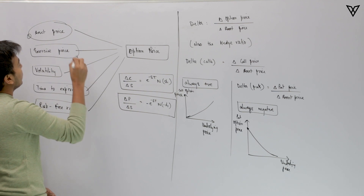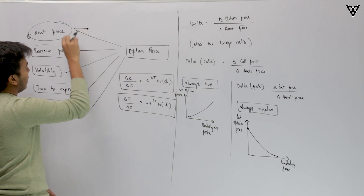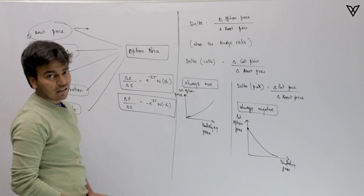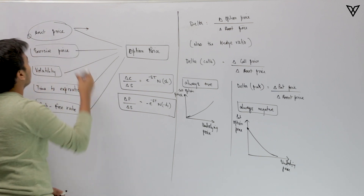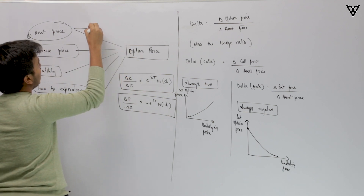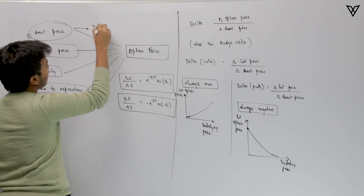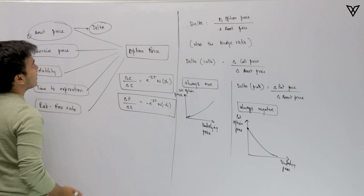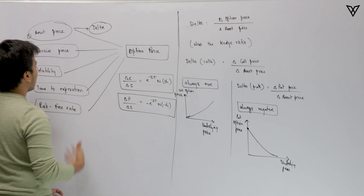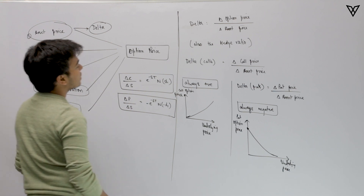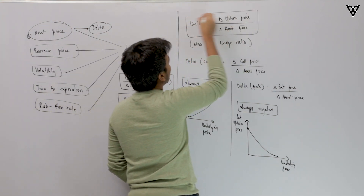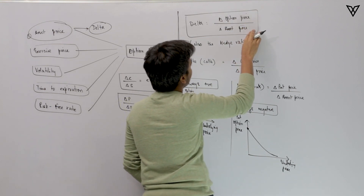What we are going to do is assign a Greek letter to each and every factor. So for example, the impact of asset price on the option price would be indicated by delta. Delta is nothing but the change in option price divided by the change in asset price.